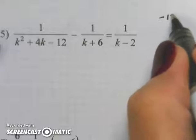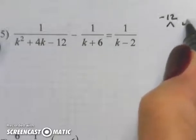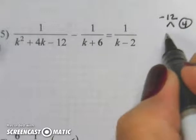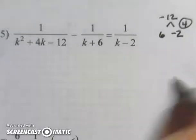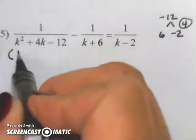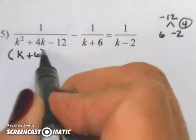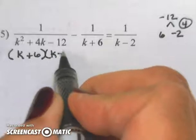What multiplies to give me negative 12 and adds up to a positive 4? That would be 6 and negative 2. So this problem factors to k plus 6 times k minus 2.